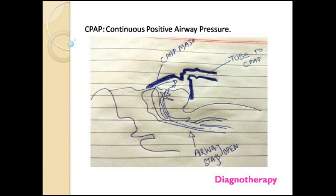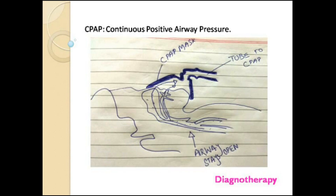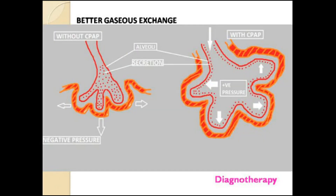CPAP may also be used for increasing the circulation of the patient. As you can see from the diagram, if this is the lung and there is the heart, CPAP increases pressure and triggers the heart so that circulation is increased. CPAP also increases the surface area of the alveoli, which helps to increase the PO₂ value, decrease the PCO₂ value, and improve gaseous exchange.